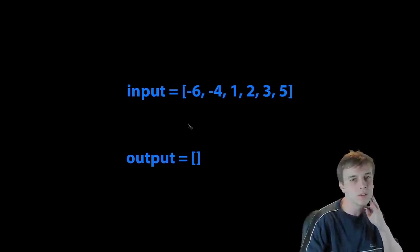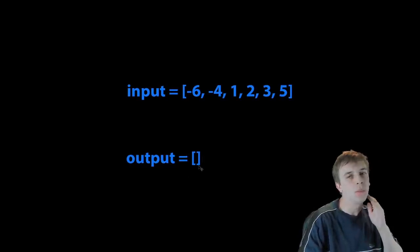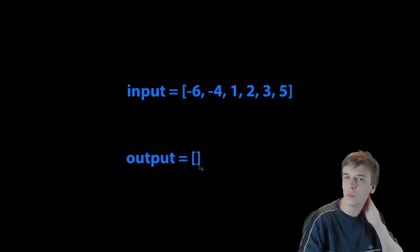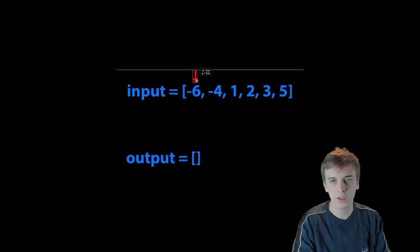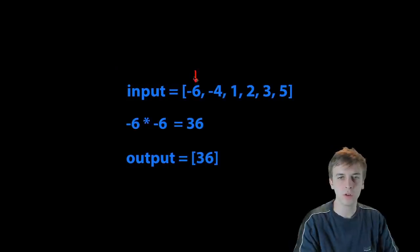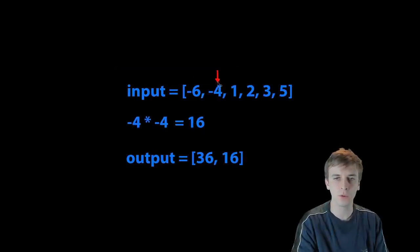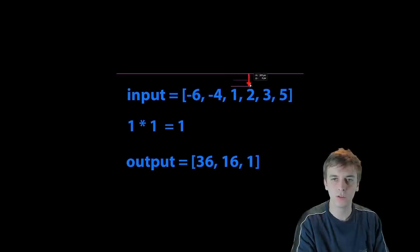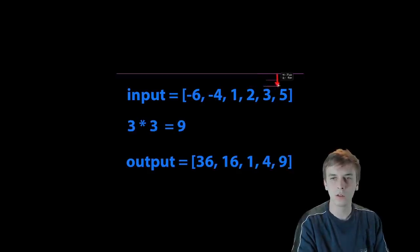Let's think about how we can get this output array to be what it needs to be. My first instinct is to loop through the array and just square everything. So if I'm looping through, I go here and square this number — we get 36 and put that into our output array. Then we go to the next number, get 16, put that in. Then we get one, put that in. Two gives us four, three gives us nine, five gives us 25.